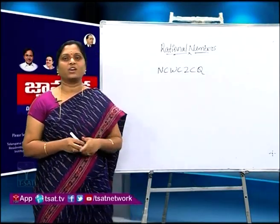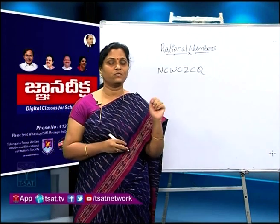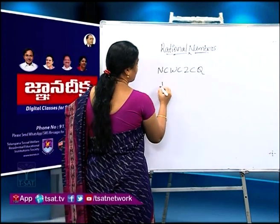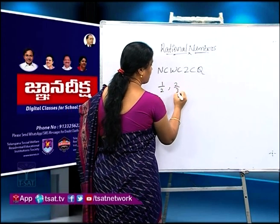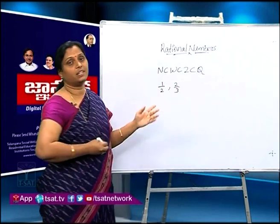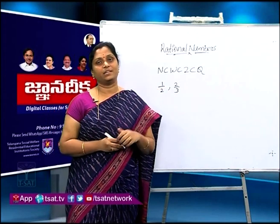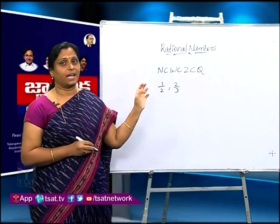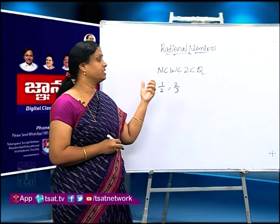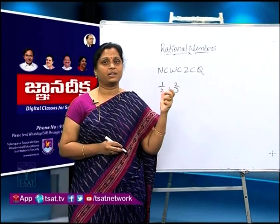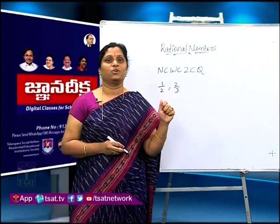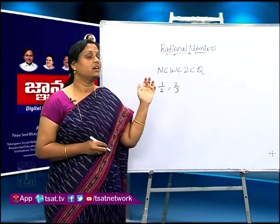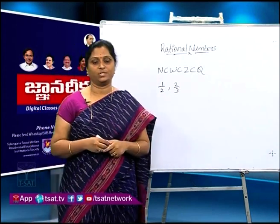Tell me, what are these rational numbers? Just now we said that 1/2, 2/3 — these are all fractions. But now we are saying these are rational numbers. What is the difference between rational numbers and fractions? A fraction cannot be negative. Why? Because a fraction is a part, and a part cannot be negative. So rational numbers are both positive and negative, whereas fractions are only positive.